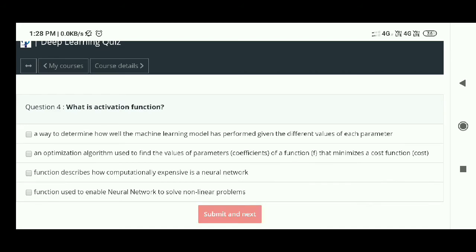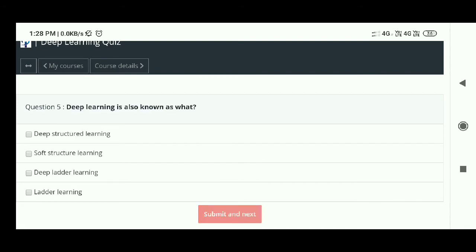Fourth question: What is an activation function? The answer is - a function used to enable neural networks to solve non-linear problems. That's option D. Fifth question: Deep learning is also known as what? The answer is - deep structured learning.